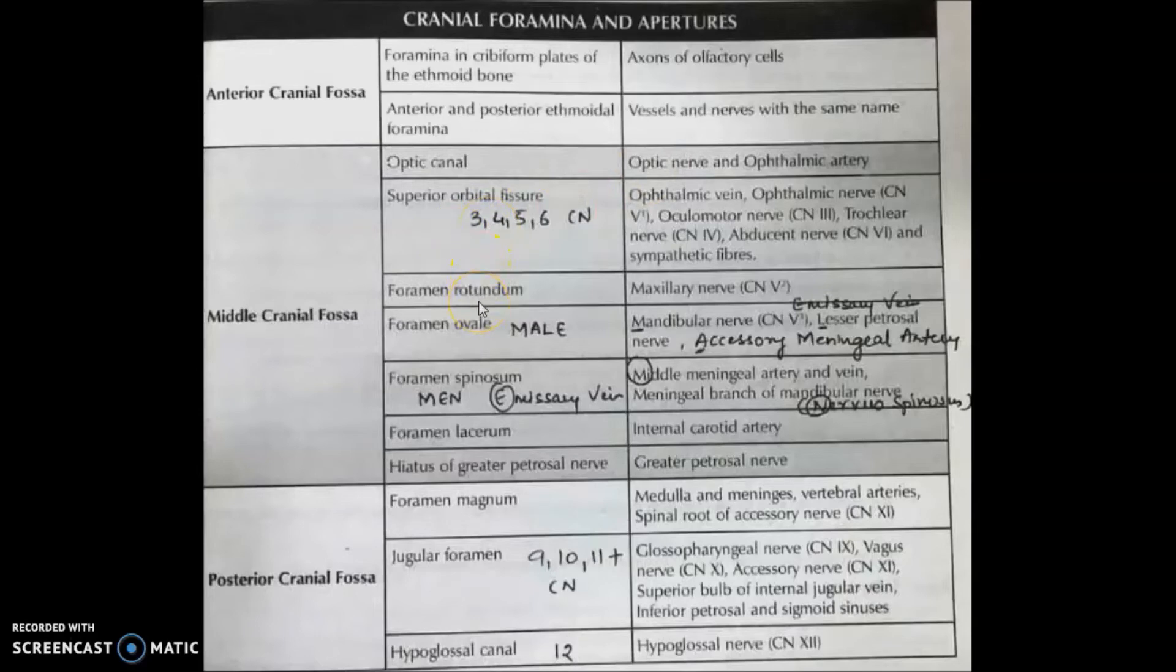Then foramen rotundum—maxillary nerve. Then foramen oval; for mnemonic, SMAIEL. M stands for mandibular nerve. A stands for the accessory meningeal artery. E stands for emissary vein. And L stands for lesser petrosal nerve.